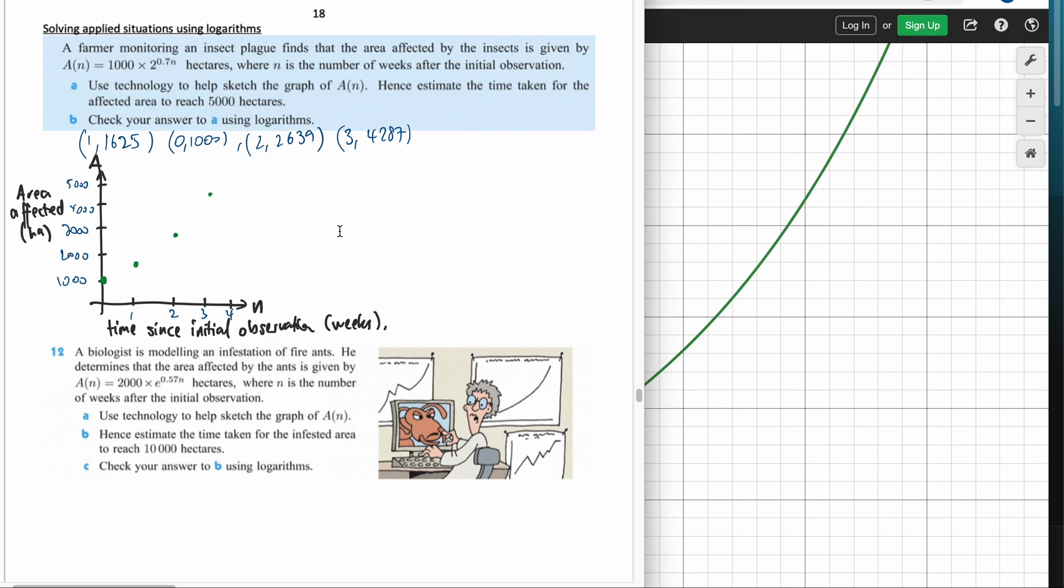Then I'm just going to join the dots with a nice smooth arc. I'm just going to call that function a(n). Lovely. So we've drawn a graph there.